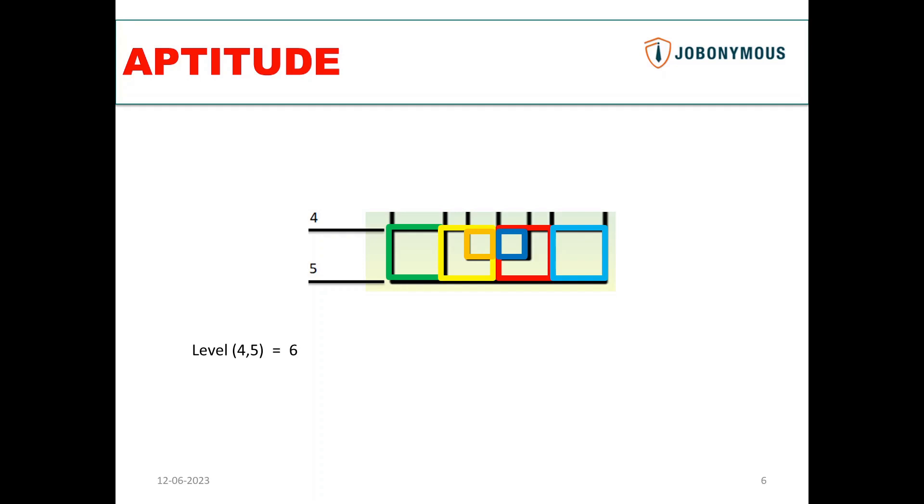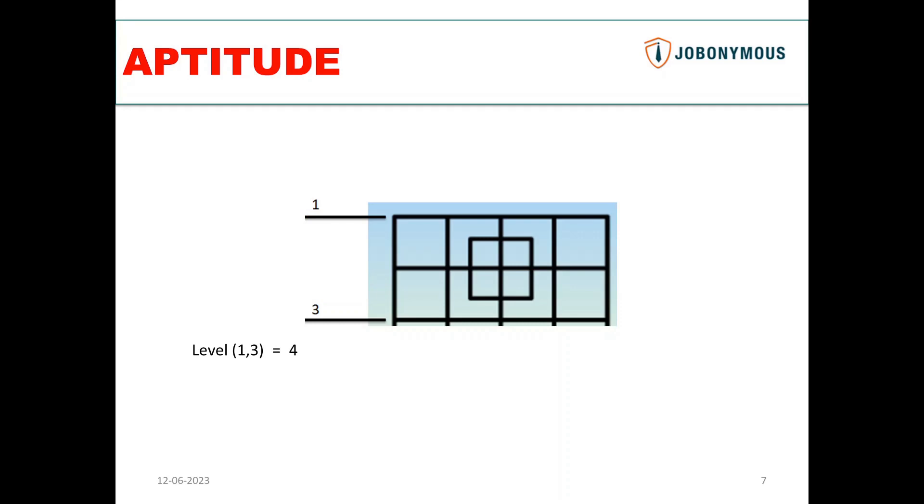Now here the question does not end. You've calculated one combination. The other combination can be one-three. So here you have to calculate the number of squares between level one and level three. Here you have to be cautious - you do not calculate these squares because we've already done them between one and two.